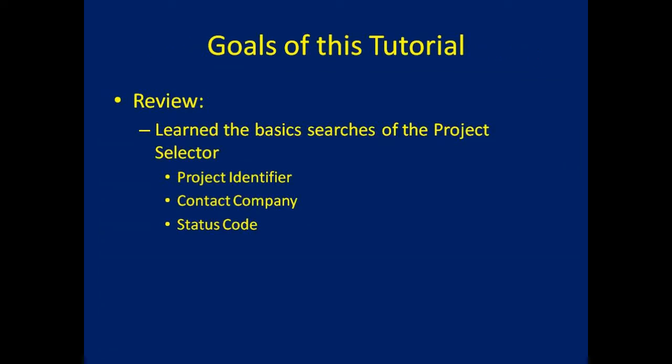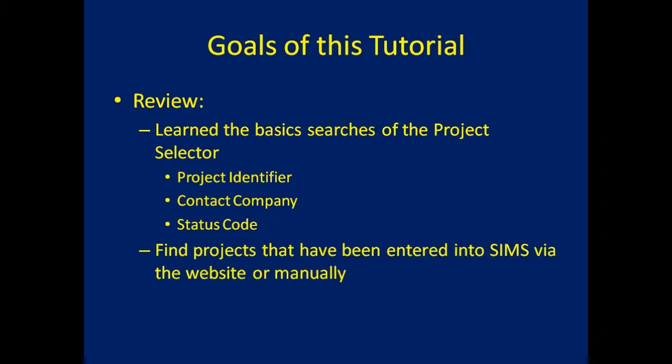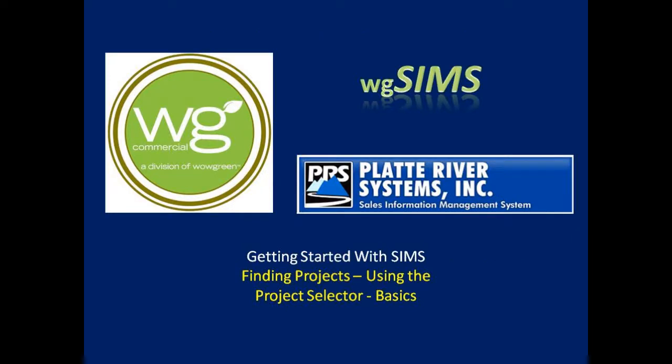Let's review what we've learned. We've covered the basics of the Project Selector: you can click the Projects button and then Search to view all your projects, or use the Project Identifier or PID to find a specific project. You can use the Contact Company name to pull up information for a particular company, or pull up all projects in a specific status code. We also saw three examples of finding projects entered via the website or manually. Thank you for viewing the Getting Started with Sims tutorial on finding projects and using the Project Selector.